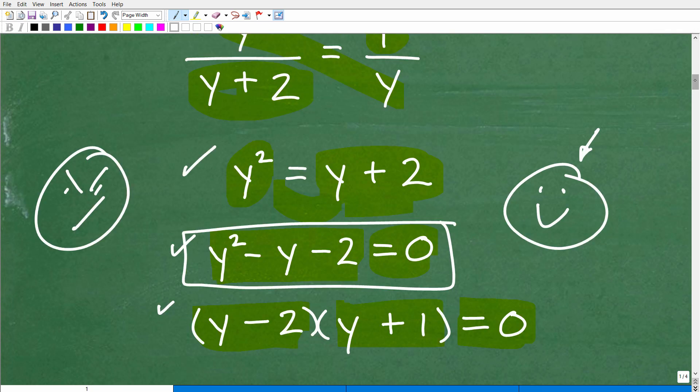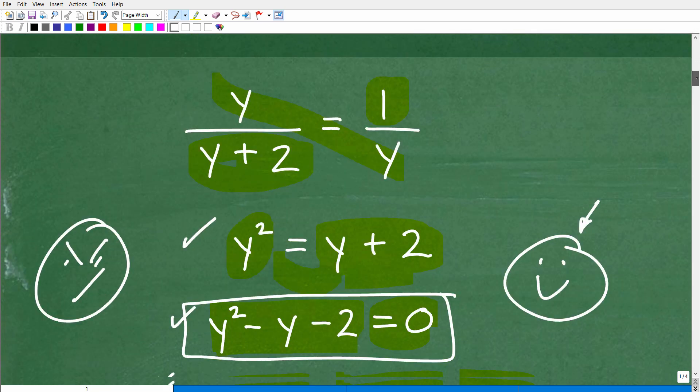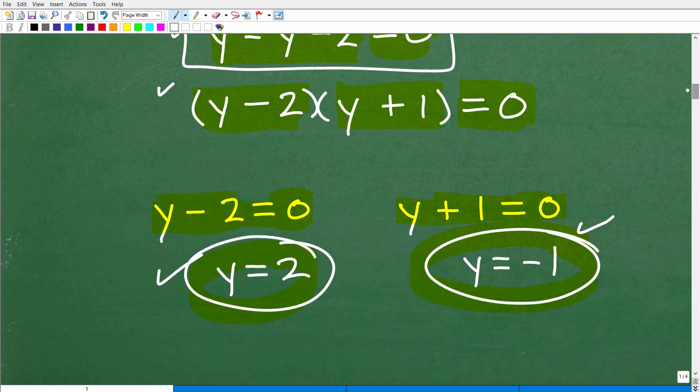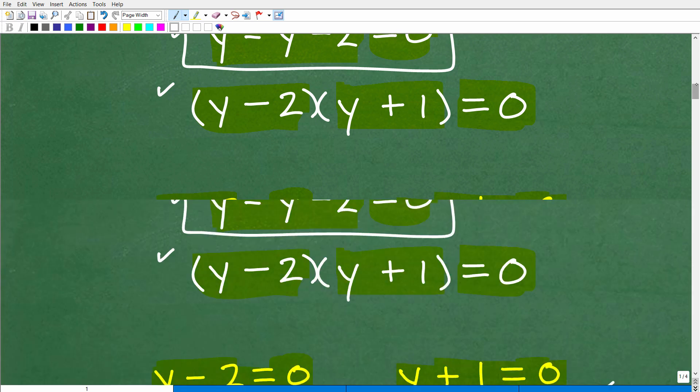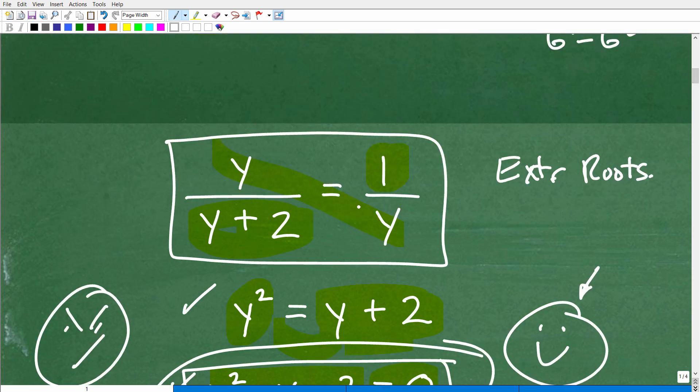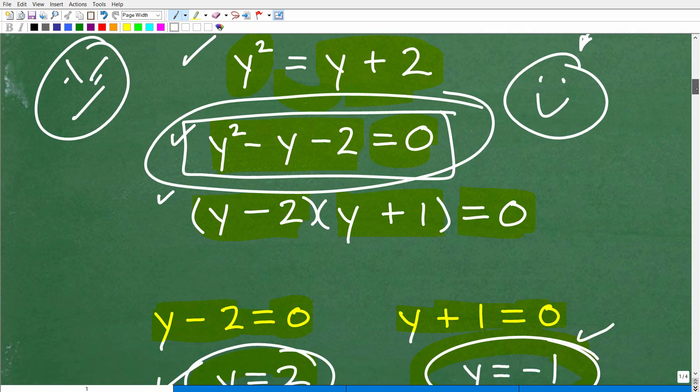So these two solutions are the solutions to this quadratic equation. They may not be the solutions to our original equation. Now the reason why is because when we did this cross multiplication, we introduced the possibility of something called extraneous roots, extraneous solutions. So what that means is that you could possibly get answers. These answers down here may or may not be the actual solutions. They're definitely the solutions to this equation, but they may or may not be the actual solutions to this equation. So how can I determine that? Well, you need to check both of these.